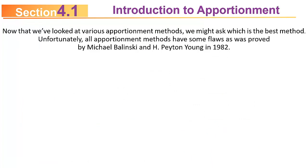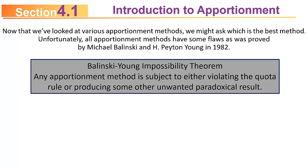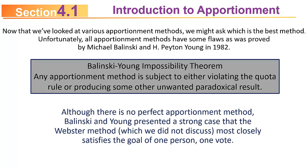Now that we've looked at various apportionment methods, which is the best? Unfortunately, you can't really answer that. The Balinski-Young Impossibility Theorem, proven in 1982, states that any apportionment method is subject to either violating the quota rule or producing some other unwanted paradoxical result — there's no single method that is always the fairest. However, Balinski and Young presented a strong case that the Webster method most closely satisfies the goal of one person, one vote.